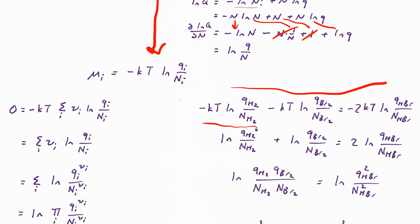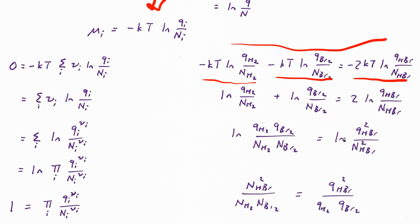Taking the H2/Br2 equilibrium condition and inserting our new result: μ(H2) + μ(Br2) = 2μ(HBr), and each chemical potential is −kT log(q/n). After dropping the −kT, we get a sum of logs: log(q/n) for H2, plus log(q/n) for Br2, equals twice log(q/n) for HBr. The sum of the two logs on the left is log of the product q(H2)q(Br2)/(n(H2)·n(Br2)), and twice the log on the right is the log of that quantity squared.